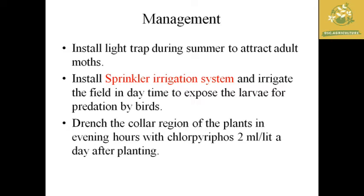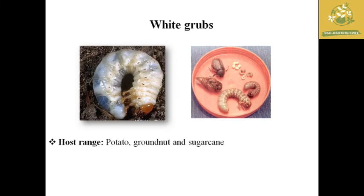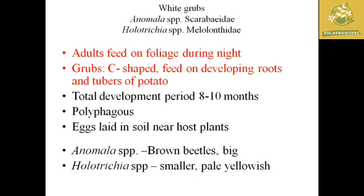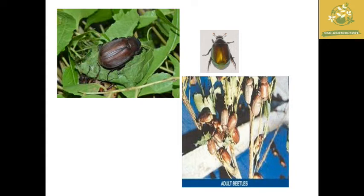The next important pest in potato is white grub. The host range includes potato, groundnut, and sugarcane. White grubs damage the roots and tubers of potatoes. There are two species: Anomala species under the family Scarabaeidae, and Holotrichia species under the family Melolonthidae. Adults mainly feed on foliage during nighttime. The grub is C-shaped and feeds on developing roots and tubers. Total development period is around 8 to 10 months. They are polyphagous and eggs are laid in soil near host plants.